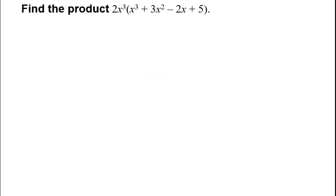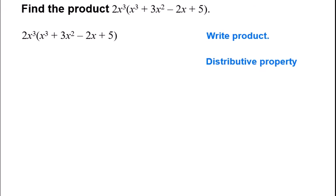In example 1, it asks us to find the product of 2x cubed times the quantity x cubed plus 3x squared minus 2x plus 5. So the way that this is set up, there's only one term that I'm going to be multiplying by this entire four-term polynomial here. So I'm going to go through a process that looks like distribution.